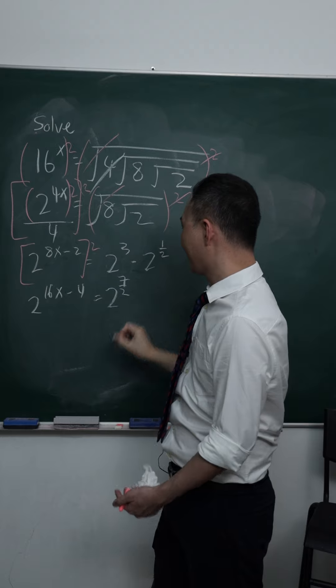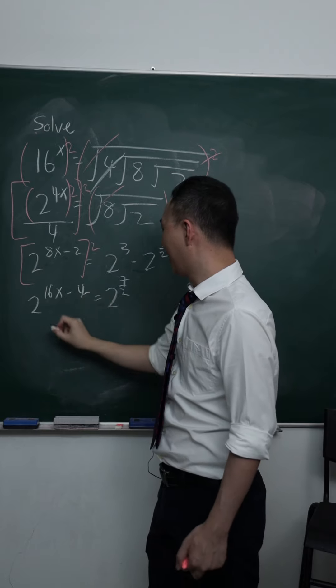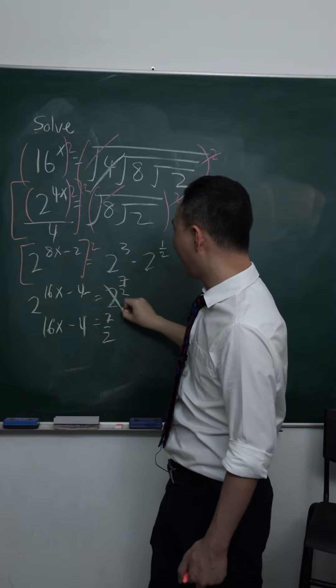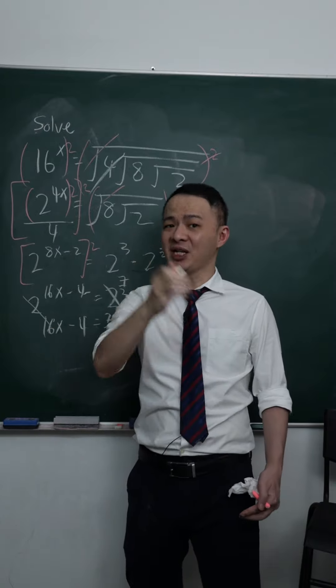7 over 2. Now, I can say 16x minus 4 equals to 7 over 2. Because whenever they have the same base, their power must be the same.